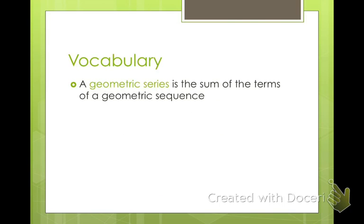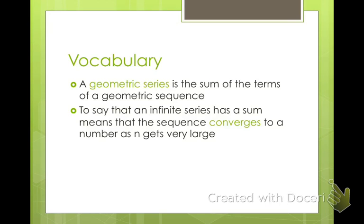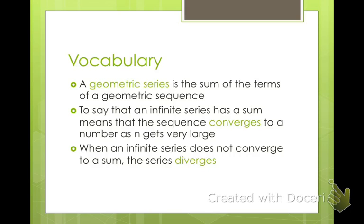For your vocab, a geometric series is the sum of the terms of a geometric sequence. Arithmetic has a common difference, so you add or subtract a constant amount, whereas a geometric series has a common ratio, so you multiply or divide a certain amount each time. To say that an infinite series has a sum means the sequence converges to a number as n gets very large. When an infinite series does not converge to a sum, then the series diverges. So converges means you can find a sum, diverges means you can't.